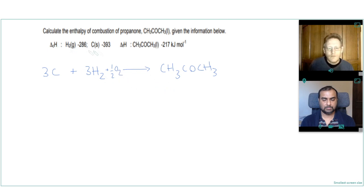And then we can use the enthalpies of combustion of hydrogen and carbon. So we're going away from carbon, away from hydrogen. And we're given the enthalpy of formation of propanone, which is minus 217. And we want to calculate the enthalpy of combustion of propanone, which is this arrow. So this time our enthalpy of combustion would go here.